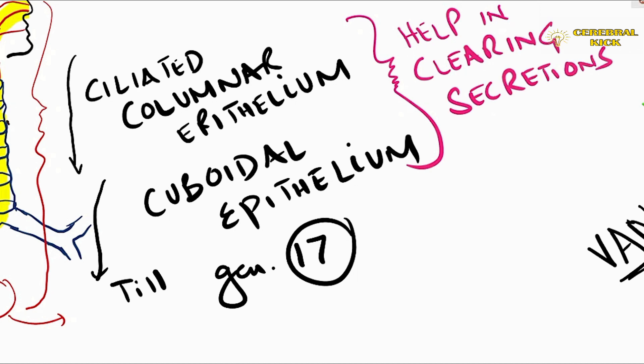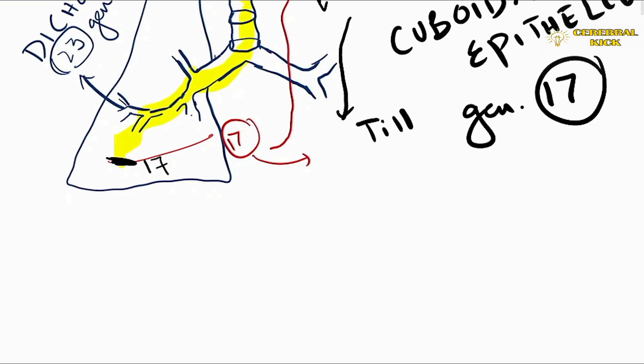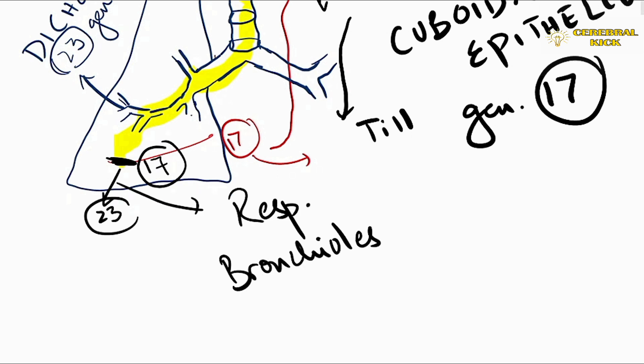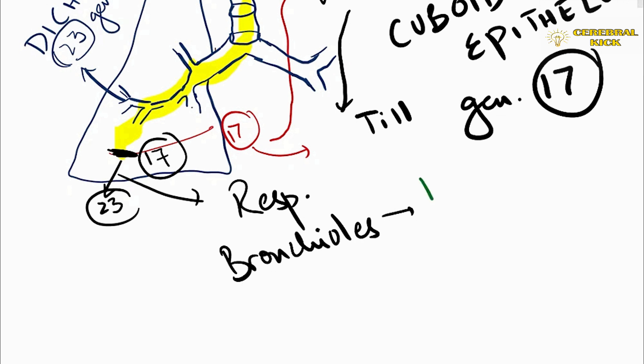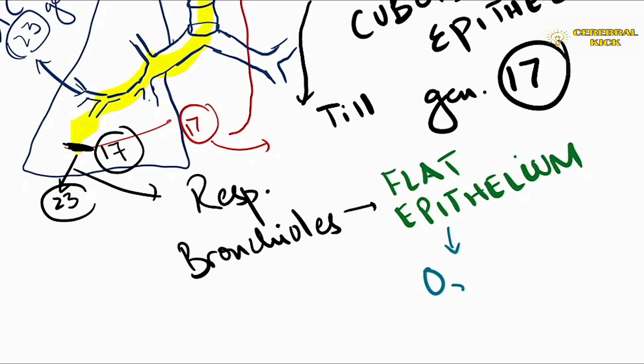When we talk about the zones beyond 17th generation, namely the respiratory zone, this is where the oxygen transfer occurs. And why? Because of the flat epithelium. The epithelia in the lower generations is flat and that is why oxygen exchange takes place in the respiratory zone.